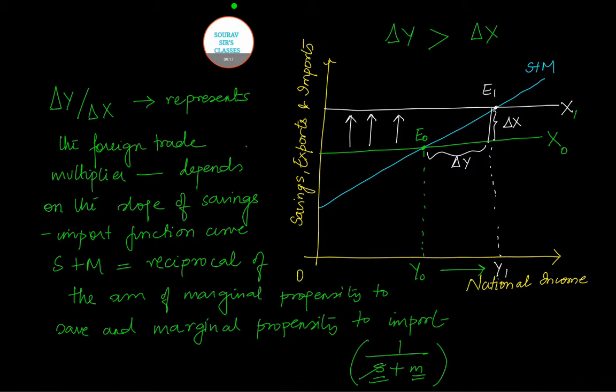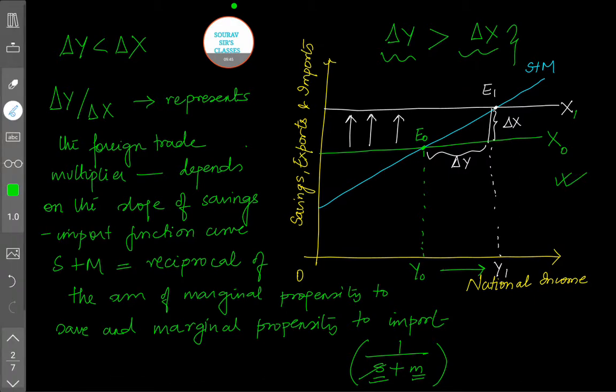Now the next question working in your mind is how this multiplier is actually working. Why this figure of ΔY is actually greater than ΔX? It should have been equal. Why is it this case? Why is this only the correct form? So there are a lot of questions in the mind.